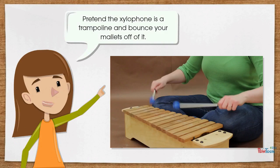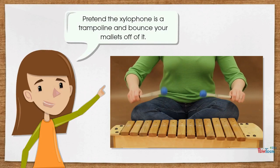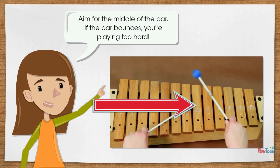Pretend the xylophone is a trampoline and bounce your mallets off of it. Aim for the middle of the bar. If the bar bounces, you are playing too hard.